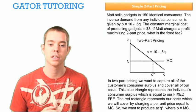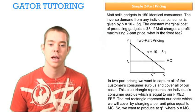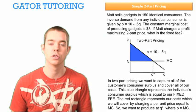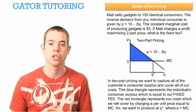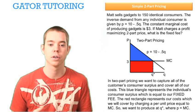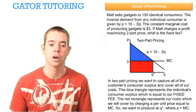In two-part pricing, we want to capture all of the customer's consumer surplus and cover all of our cost. This blue triangle represents the individual's consumer surplus, which is equal to our fixed fee. This red rectangle represents our cost, which we will cover by charging a per unit price equal to marginal cost.